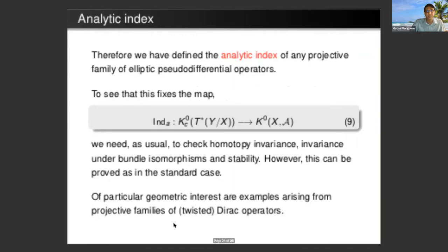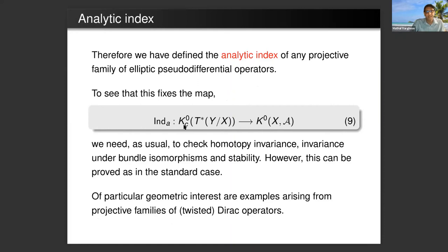The analytic index maps the compactly supported K-theory of the fiberwise cotangent bundle and maps it to the twisted K-theory of the base. To show that this map is well defined, we have to check homotopy invariance, invariance under bundle isomorphism, and stability, and we show all this.